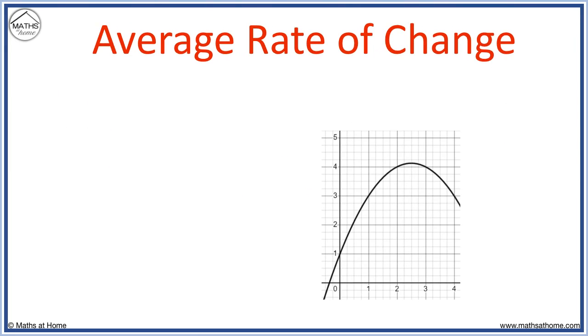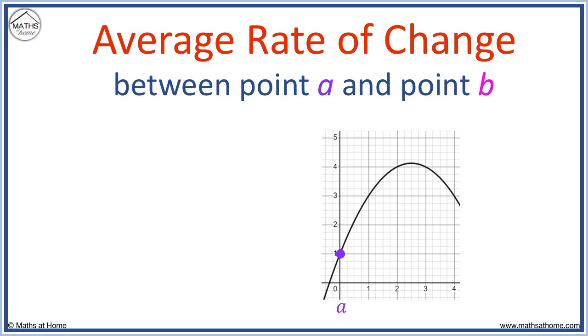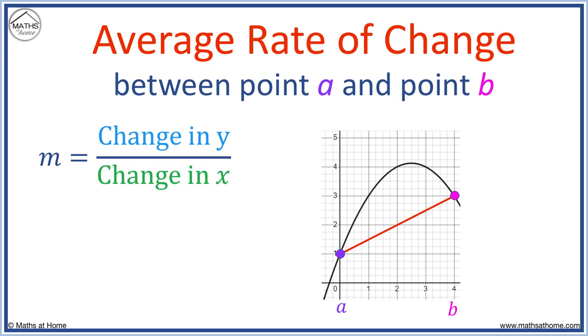The average rate of change between two points A and B is shown by the gradient of this red line. It is found by the formula change in y over change in x. The change in y-coordinates is the height between the two points, which is two squares long. The change in x is the horizontal distance between the two points, which is four.